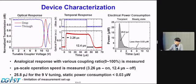First, the tunable coupler is characterized. For the optical response, we achieved analogical response with 0 to 100% coupling ratio, as you can see in the left figure. For the time response, the on-state speed is about 3.26 microseconds, and the off-state is 12.4 microseconds.